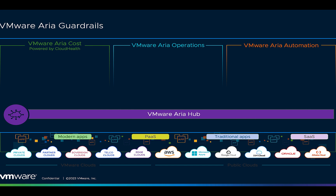Before I touch on Guardrails, I want to explain the umbrella it's under: VMware ARIA. ARIA is a multi-cloud management system built for cloud-native and public cloud environments. It provides end-to-end tools for managing the cost, performance, configuration, and the delivery of cloud infrastructure and cloud-native applications, enabling companies worldwide to effectively and efficiently use the cloud.